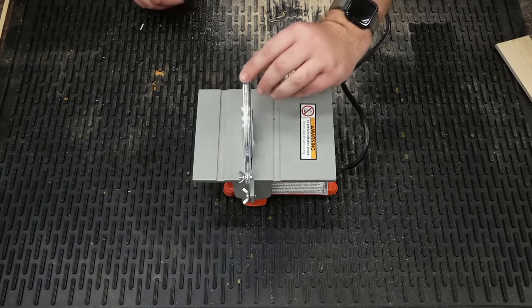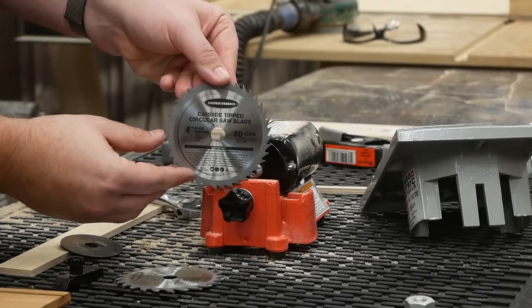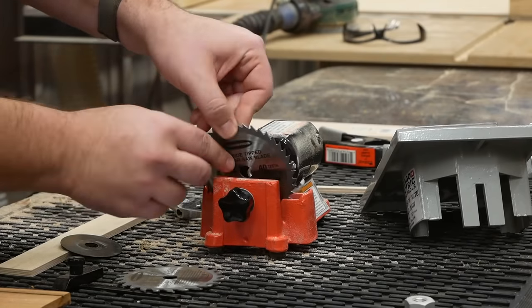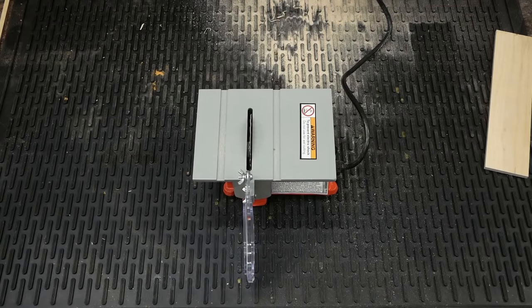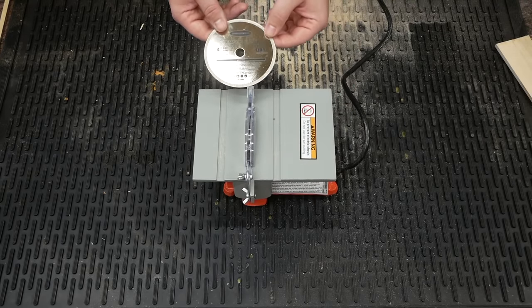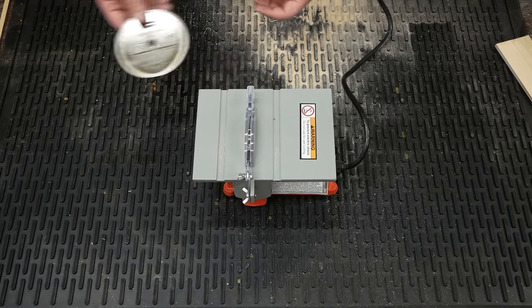The blade it comes with—it actually comes with two blades—is this 40-tooth, definitely not carbide-tipped blade. It's just steel, and since I ground one of the teeth off with a file, it doesn't appear to be particularly hard steel. And this one, a diamond blade for cutting tile. I don't have any tile to test on it, but I don't imagine it would fare well with that.